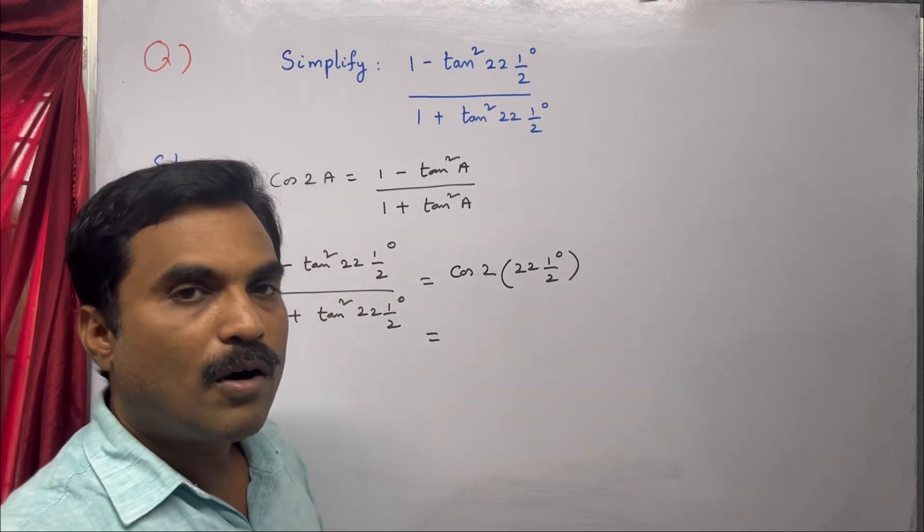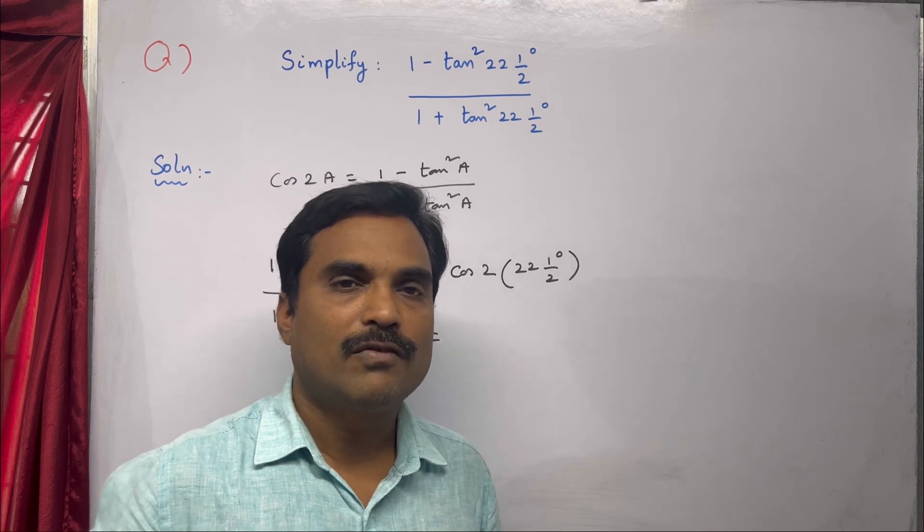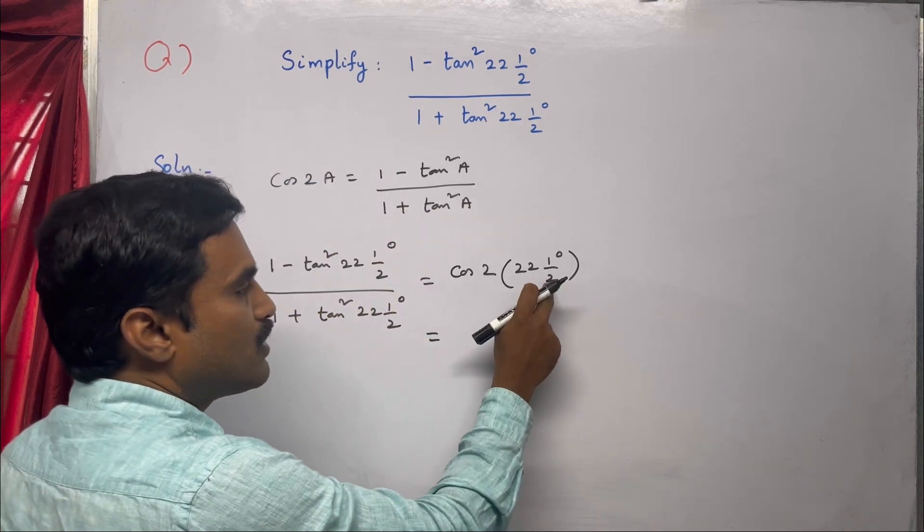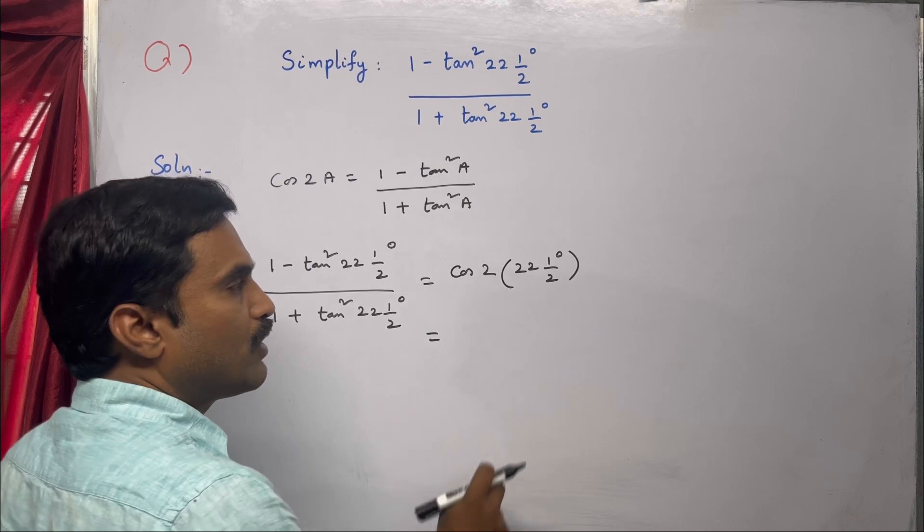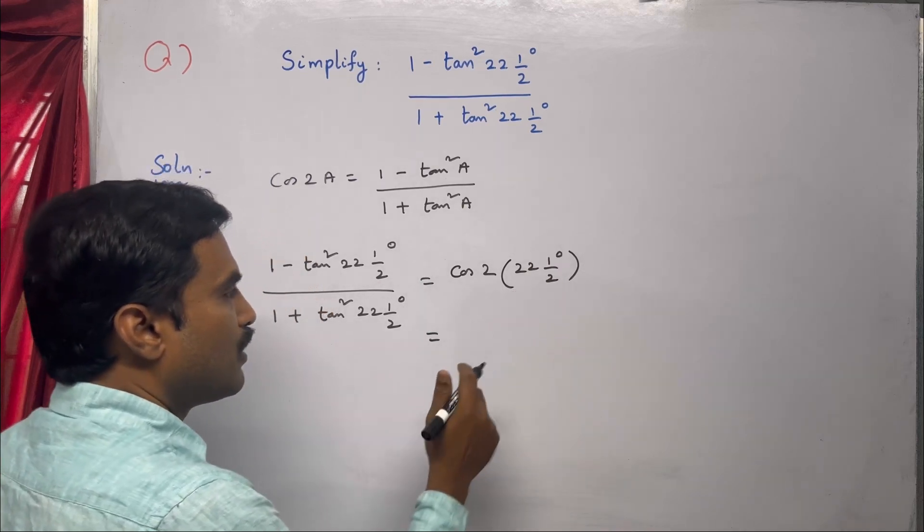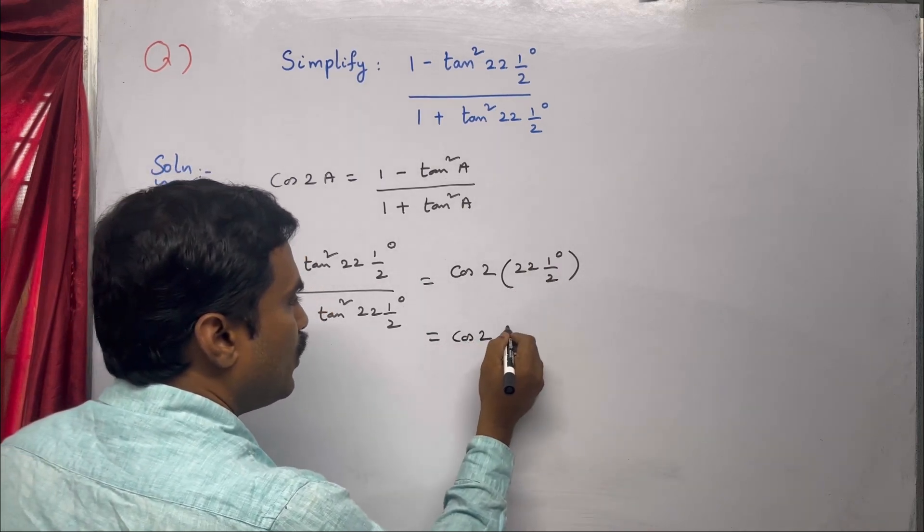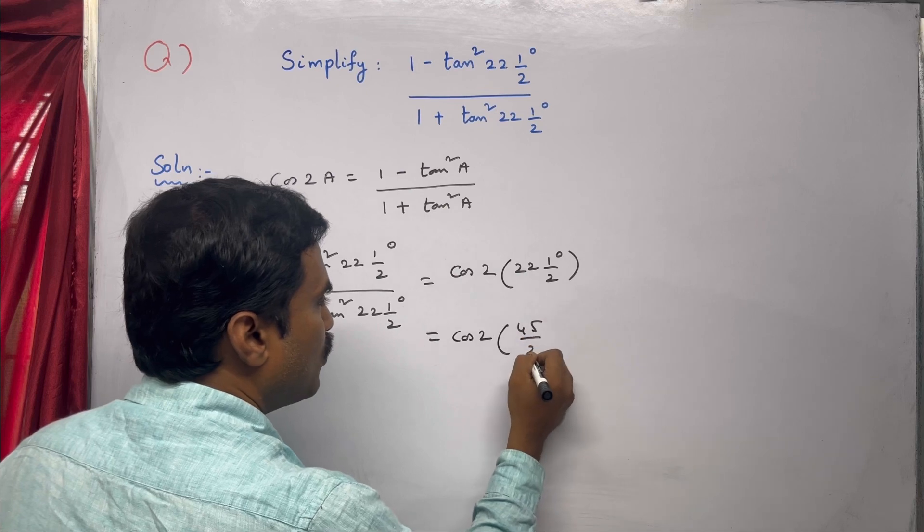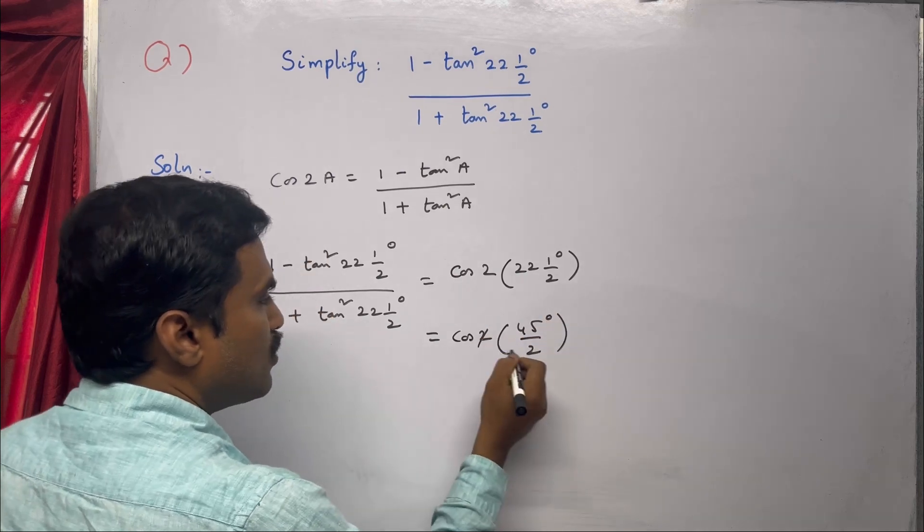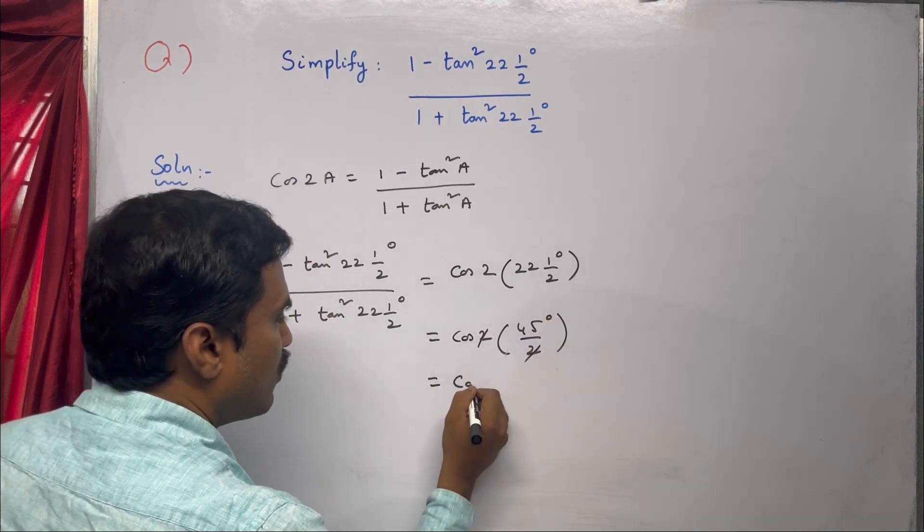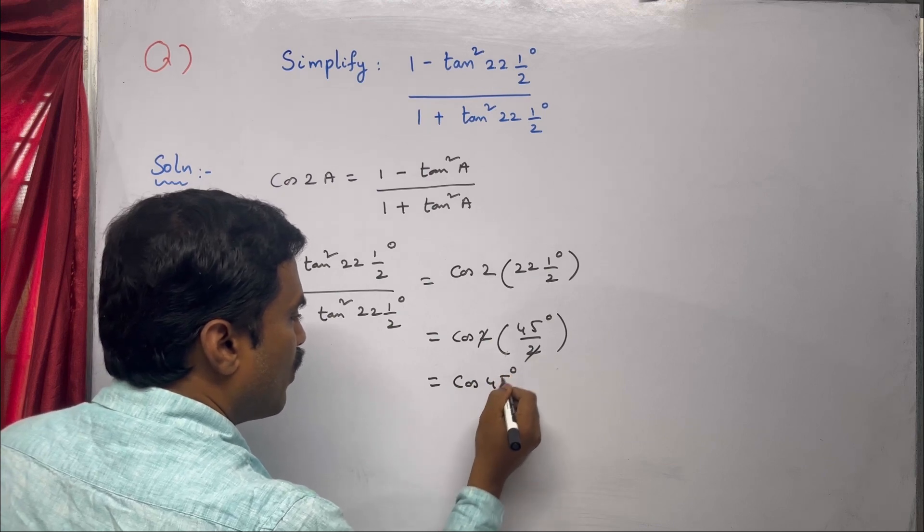Now 22 and 1/2 degrees is in the form of mixed fraction, so first we will convert that into a fraction. You have to cross multiply: 2 into 22 that is 44 plus 1. So you get cos 2 into 45 by 2 degrees. Now this 2 and 2 cancel. This is equal to cos 45. What is cos 45 value? That is 1 by root 2.